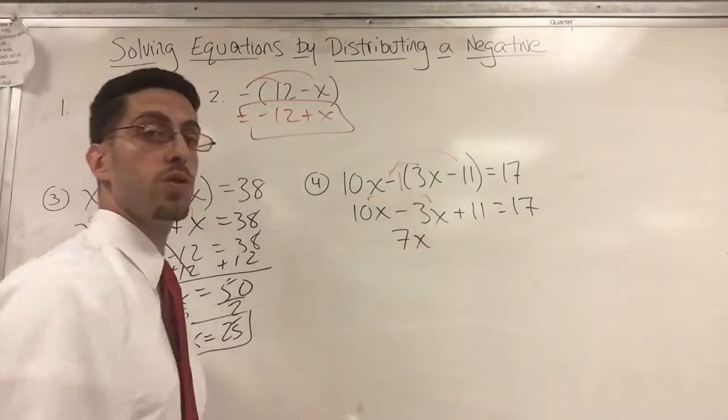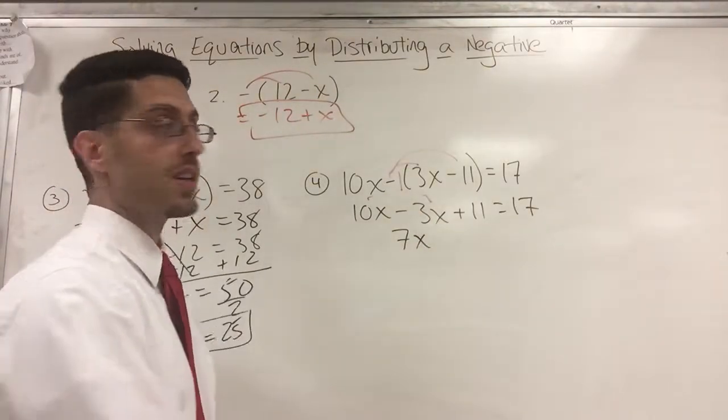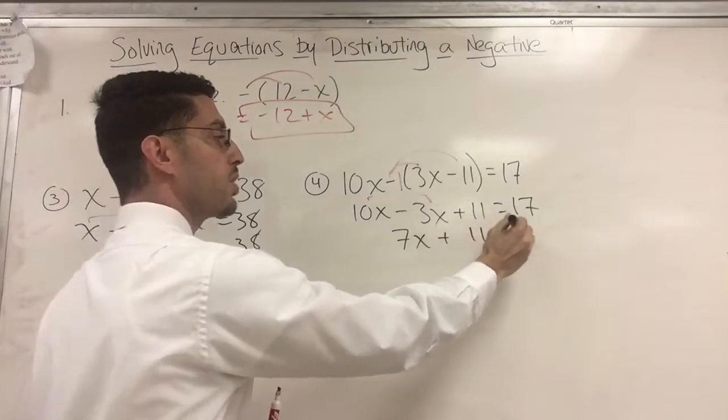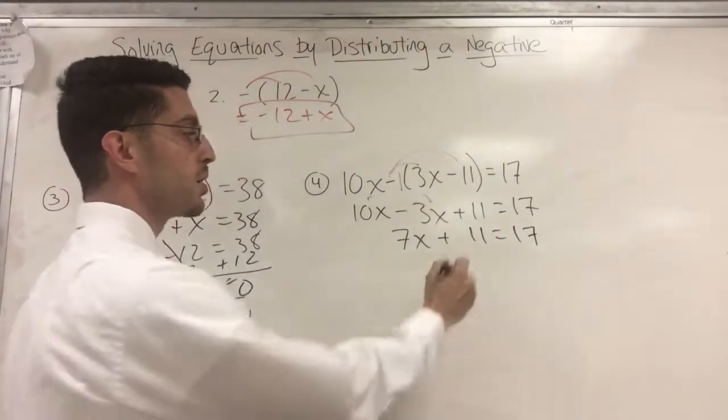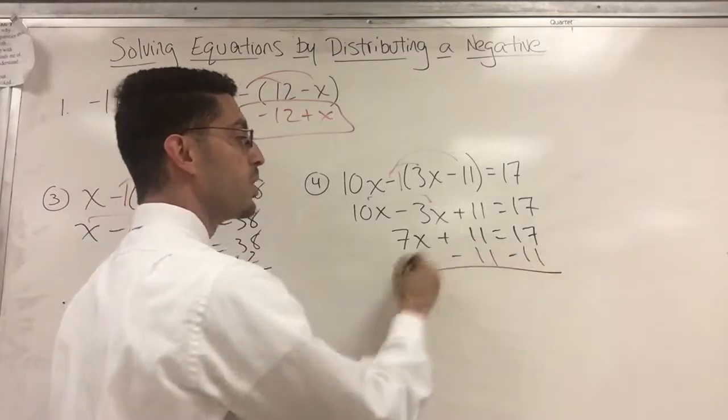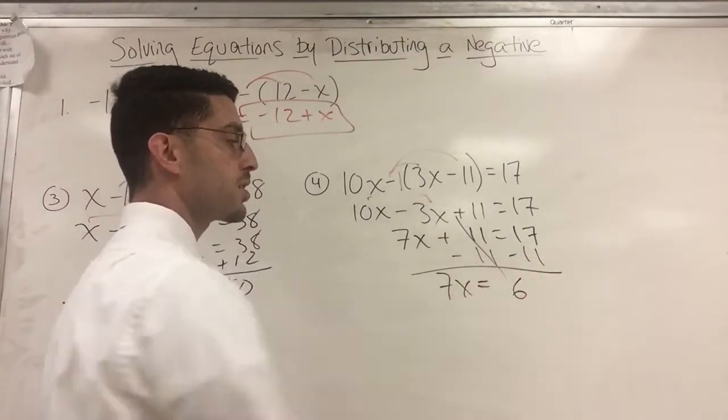So 10X minus 3X, whatever it says to do is what you do. It says subtract, you subtract. You get 7X. Plus 11 drops down. And we are right back to our classic two-step equation. This is instinctive by now. We subtract 11, and what do we get? 6.